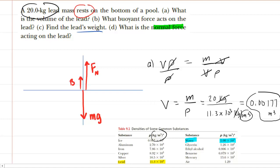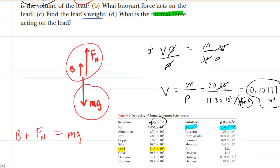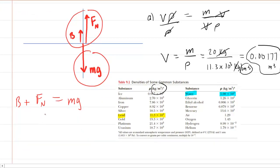And since this mass is at rest, we know that the upward forces must equal the magnitude of the downward forces. So in other words, we can say buoyant force plus normal force must equal mg. That would be the only way that the lead mass would remain at rest. And what we'll do is solve for the normal force. So we'll subtract the buoyant force from both sides, and we can see that the normal force is simply the weight minus the buoyant force.